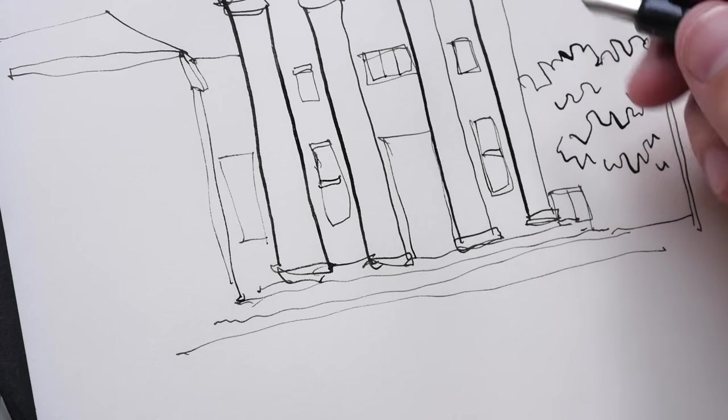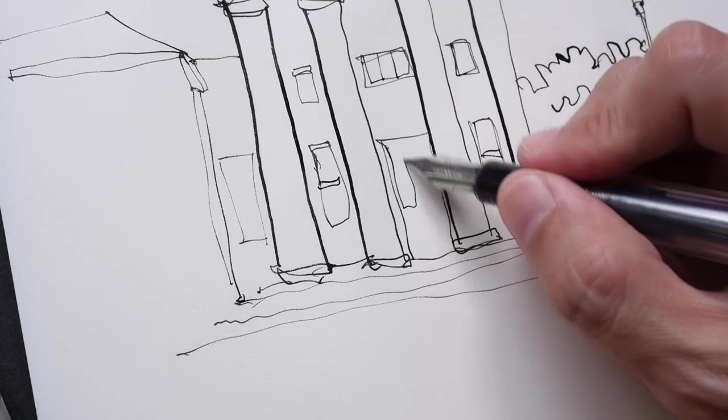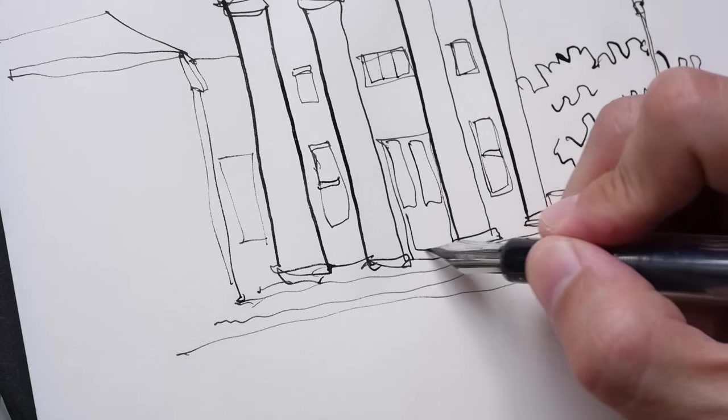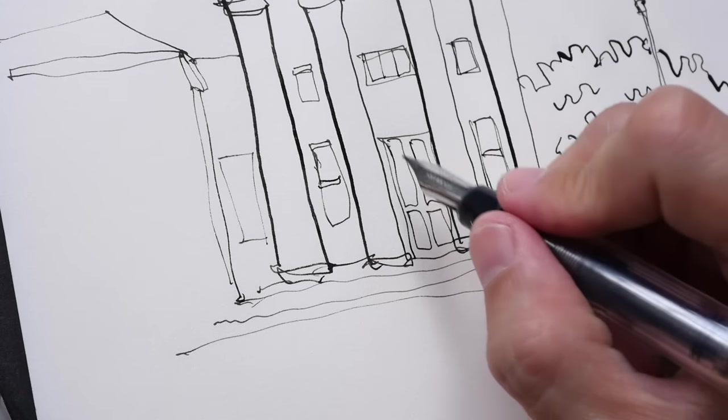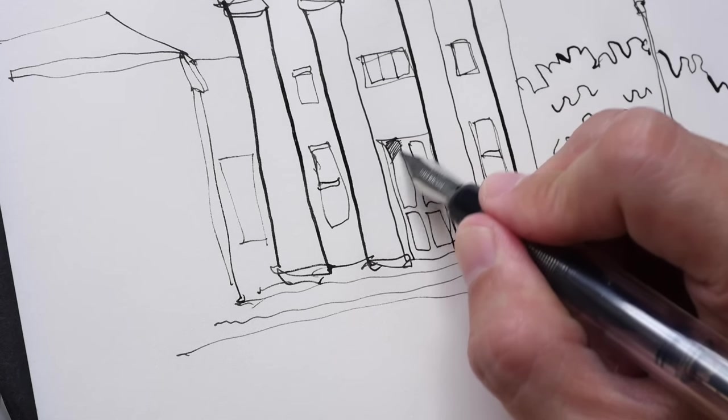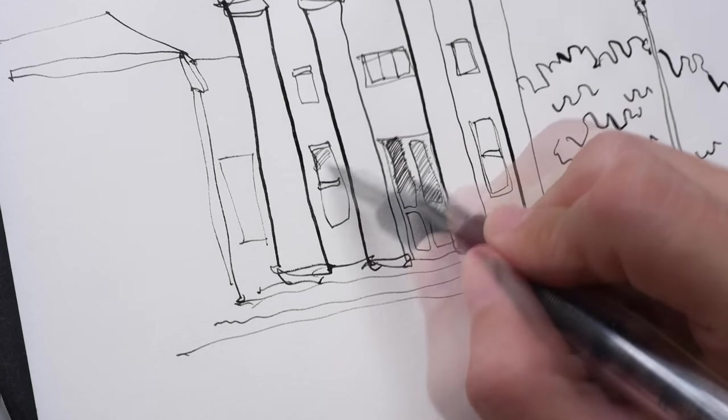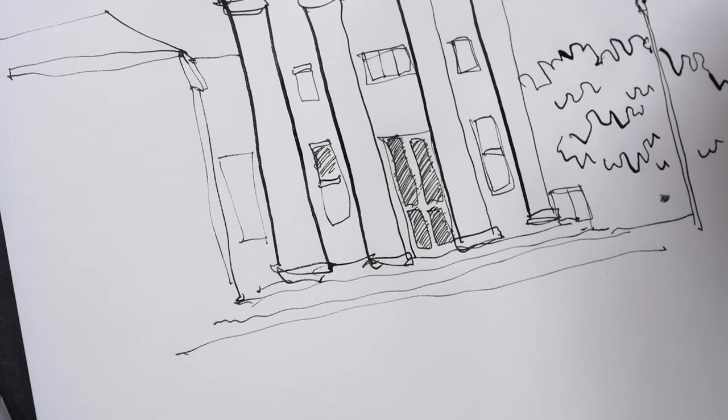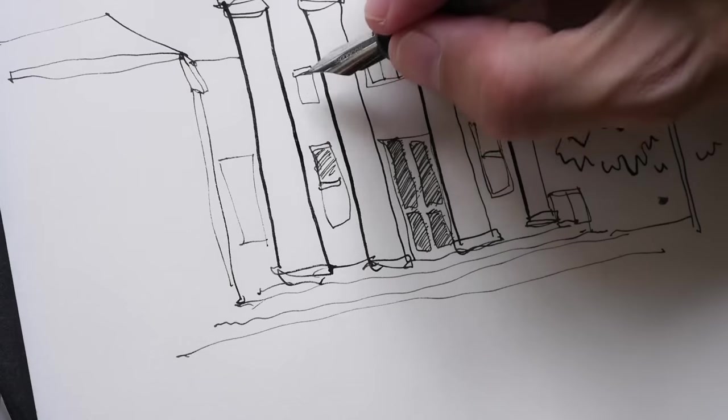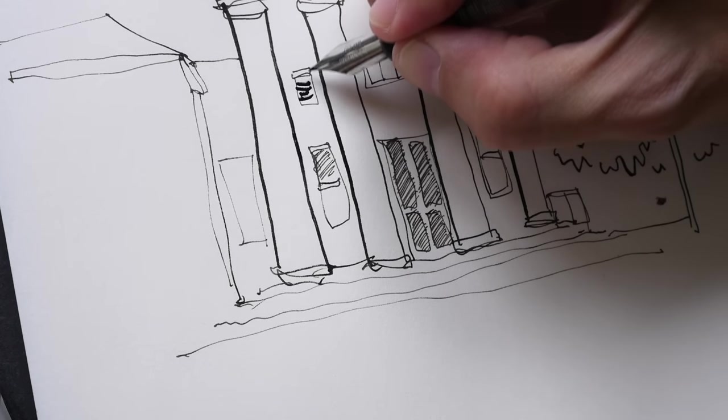So perhaps for the door I might want to crosshatch the glass area just to make it much darker. If I want to use the thicker lines I can do so as well for hatching, but I have to go a bit slower.